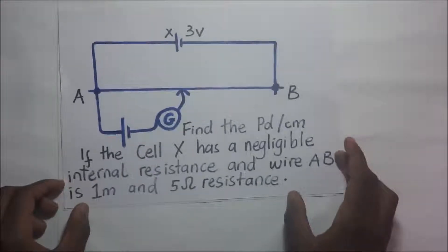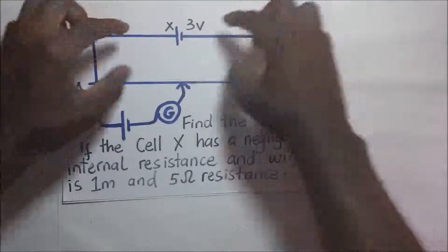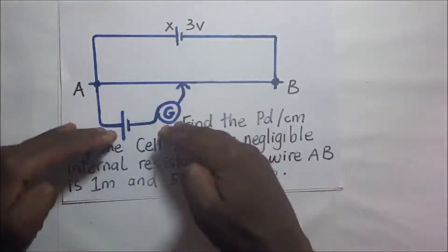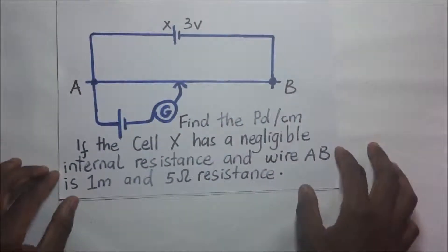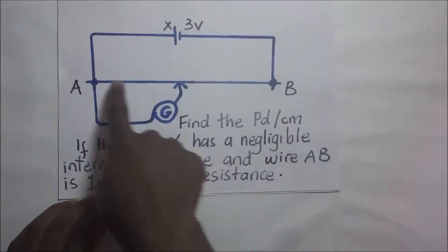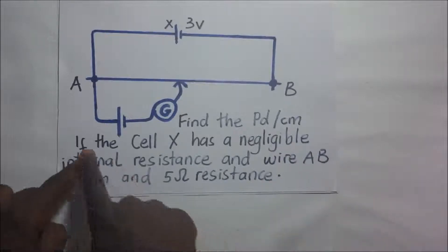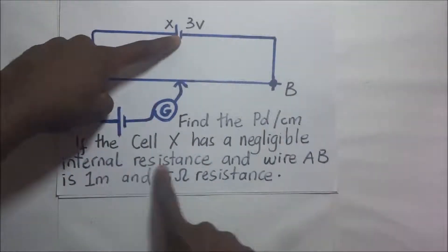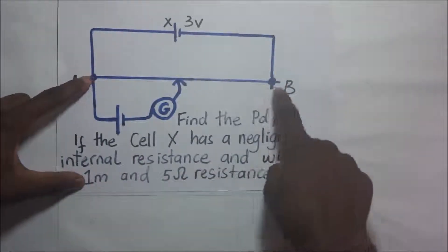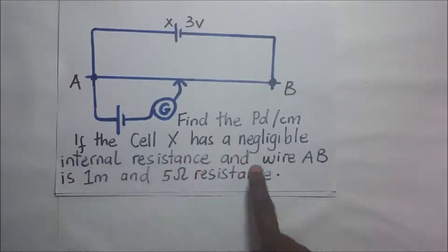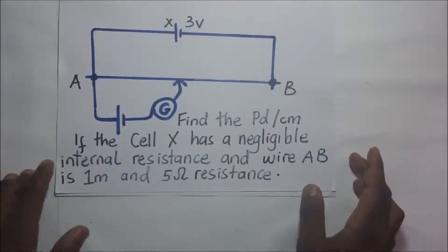Before us we have a question. This is a potentiometer — the upper part is what you call the primary circuit, and the lower part is the secondary circuit. This potentiometer wire has a slide wire AB, and we are being required to find the PD per centimeter of this slide wire. The details of the question are: cell X has a negligible internal resistance, wire AB is one meter long and has a resistance of five ohms. Find the PD per centimeter of the wire.